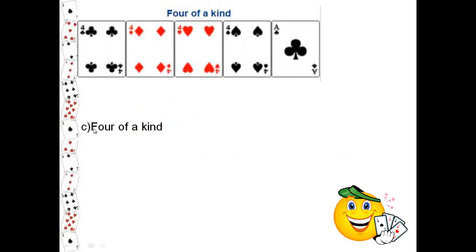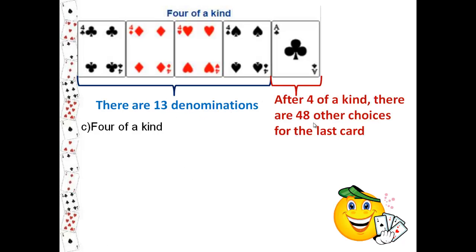The third one you're asked to find is how many four of a kinds could you have in a deck of cards. Four of a kind means four of the same denomination, like four fours, four aces, four twos, and so on. There are thirteen denominations, and after four of a kind, there are forty-eight other choices for the last card. So the possible hands are thirteen times forty-eight, which is 624 possible four of a kind hands.